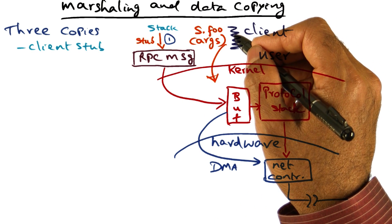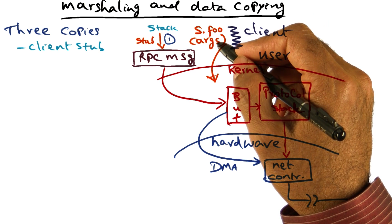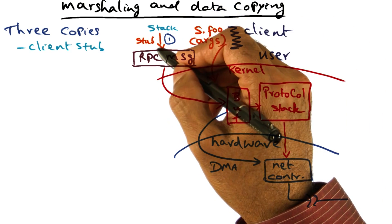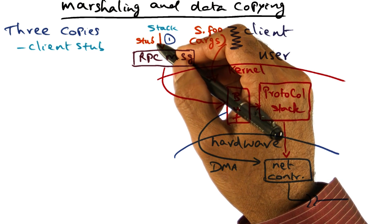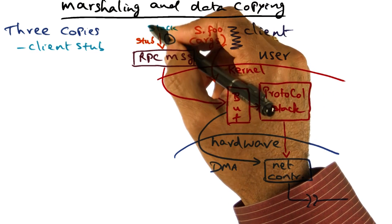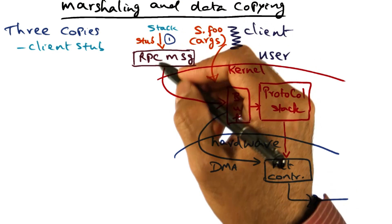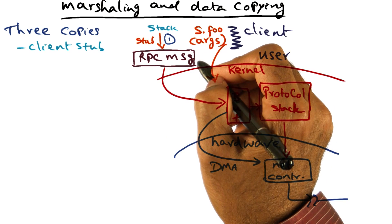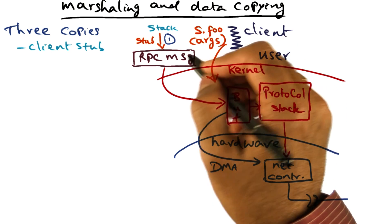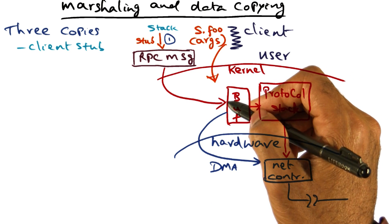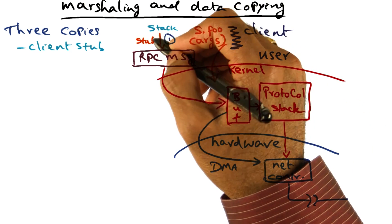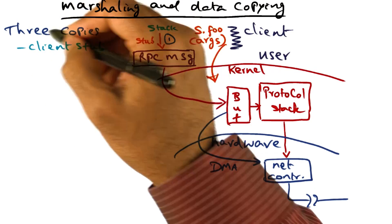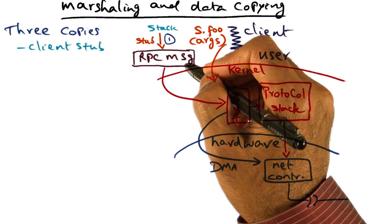When a client is executing a procedure, all the arguments for the procedure call it wants to make are living on the stack of the client. There is an entity called the client stub, and the role of the client stub is to take the arguments of the call which are living on the stack and convert them into a contiguous sequence of bytes called an RPC message. The RPC message has no semantic meaning — it is just a contiguous string of bytes which you can pass to the kernel, and the kernel can then send it out on the wire. That is the first thing the stub does, and that's the first source of overhead: the client stub makes the first copy from the stack in order to create an RPC message.